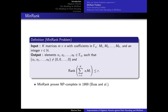The min rank problem is easy to describe. One has a set of K matrices of size M times N with coefficients in a finite field F_Q, and an integer R, and one wants to find a non-trivial linear combination of those matrices which is of small rank. This problem has been proven to be NP-complete in 1999.